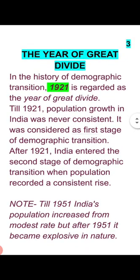In demographic profile, there is mention of the year of great divide, that is 1921. The question arises: why is 1921 called the year of great divide? Before 1921, the condition of India's population was fluctuating — it increased and reduced. But after 1921, the population kept increasing continuously and never went back. That is why 1921 is called the year of great divide.